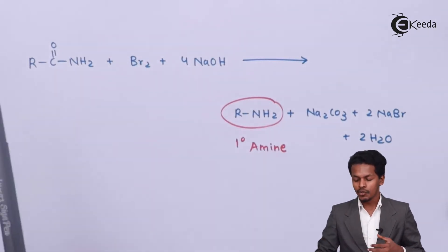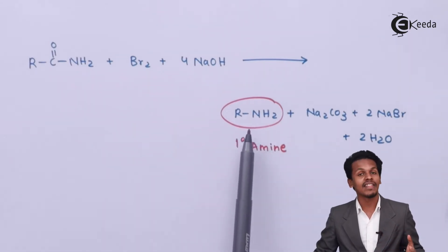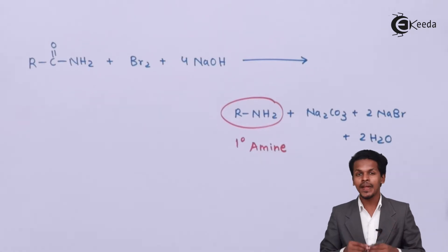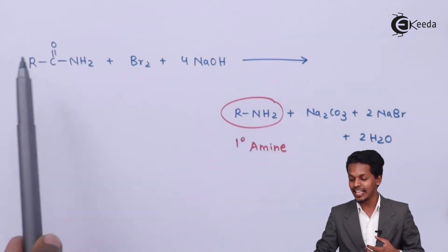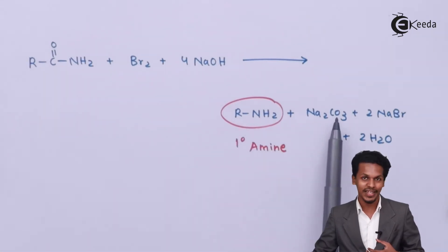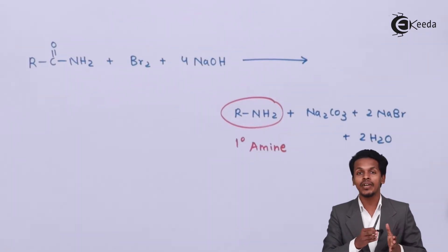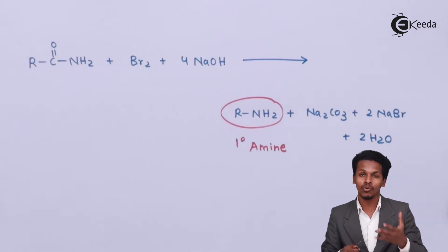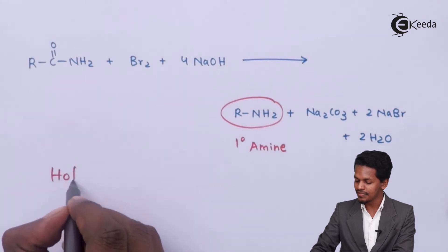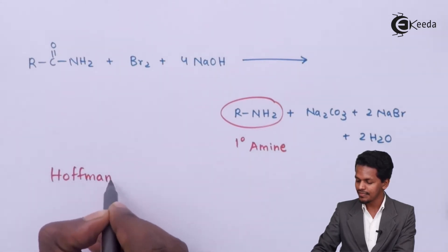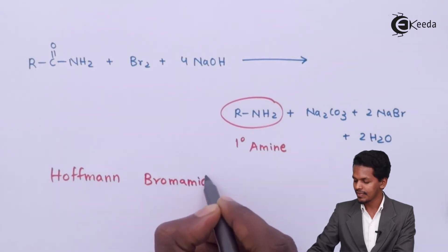So the product we get is again a primary amine. But if you observe, the total number of carbon atoms present in the amide is not the same as in the primary amine product. The reason is that the carbon in the carbonyl group is degraded and removed in the form of Na2CO3, that is sodium carbonate. This kind of process — converting an amide into an amine by decreasing the total number of carbon atoms by one — is known as Hofmann's bromamide degradation.